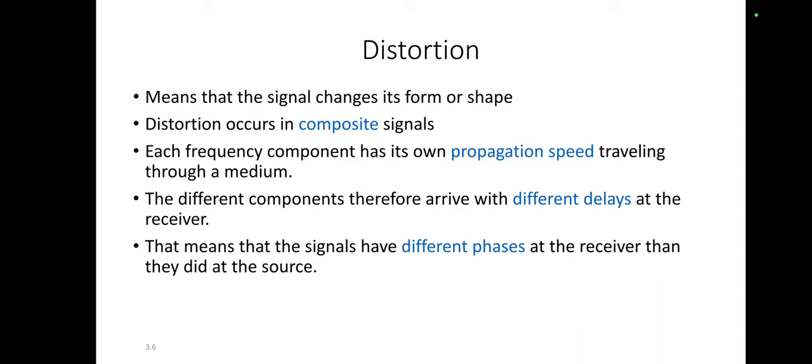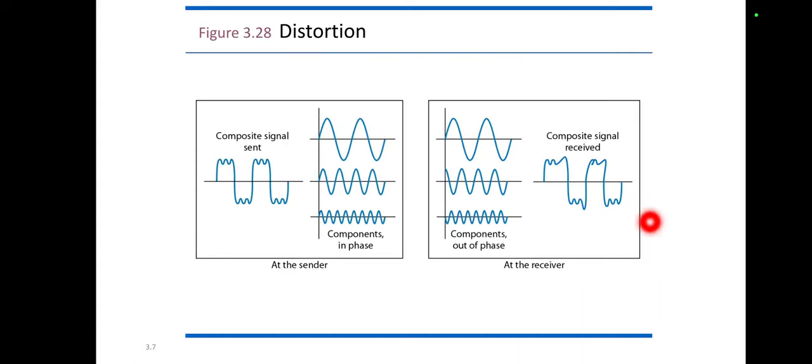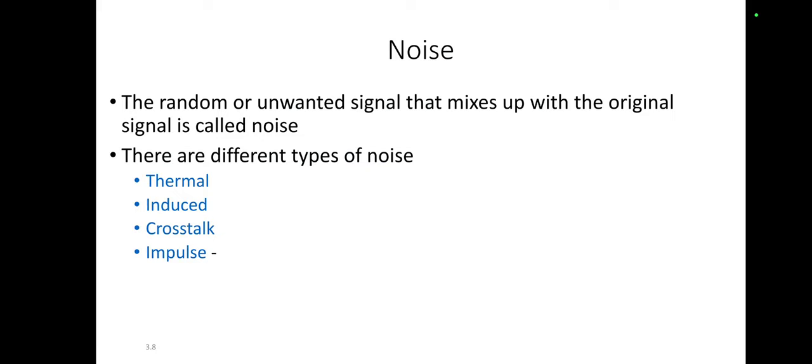Every component of a composite signal has its own propagation speed when it travels through the medium, resulting in different delays for different components. Therefore, they arrive at the receiver with different delays, meaning the signal components have different phases at the receiver than they did at the source. As shown in the diagram, at the sender side the composite signal has a certain shape, but at the receiver side the shape changes because every component travels at a different speed.